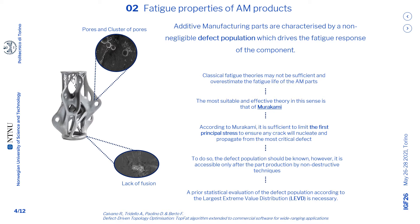The most suitable theory in this sense is that of Murakami. His model can predict the maximum first-principle stress which can nucleate and propagate a crack from the most critical defect. If that first-principle stress threshold is not exceeded, then the part can be considered safe, even in the presence of defects. With the aim of evaluating this limit, the defect population must be known. However, it can be accessed only after the part production, with for example non-destructive techniques, when the design phase is already concluded. In order to access this defect population during the design phase, it has to be estimated statistically a priori.